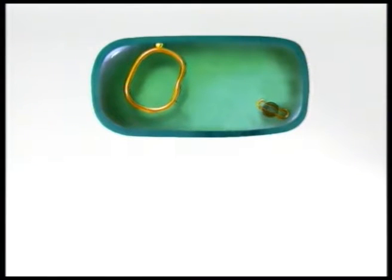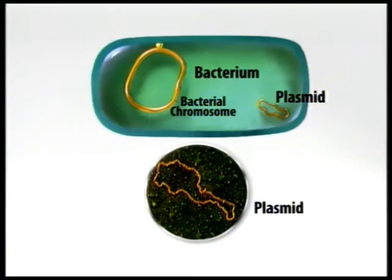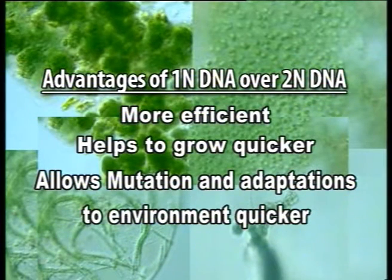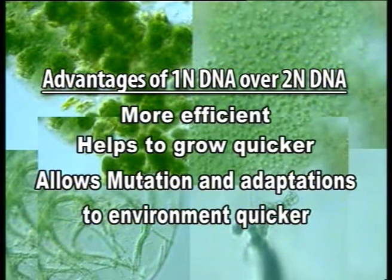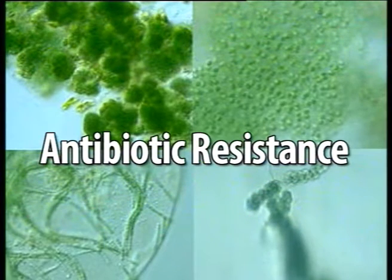The bacterial genome is present in the cytoplasm. Bacteria do not have a nuclear membrane; instead they have a nucleoid, which contains bacterial DNA in two locations: in the circular chromosome, which may be attached to the cell membrane, or in much smaller unattached circular plasmids. Bacterial DNA is circular and haploid. The advantages of haploid DNA over diploid DNA include greater efficiency, faster growth, and quicker mutations and adaptations to the environment. Plasmids are extra chromosomal circular DNA and are involved in antibiotic resistance.